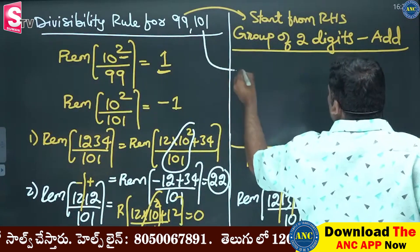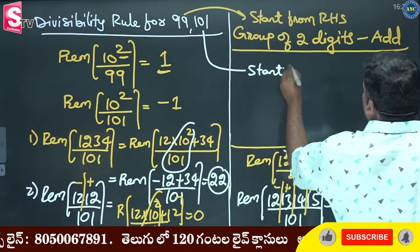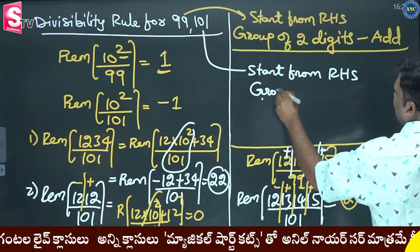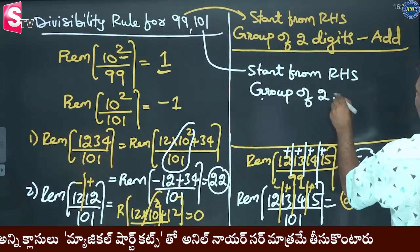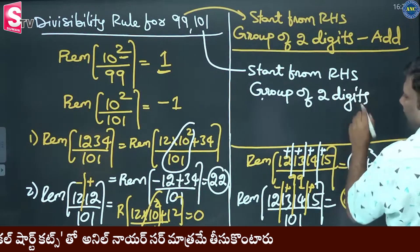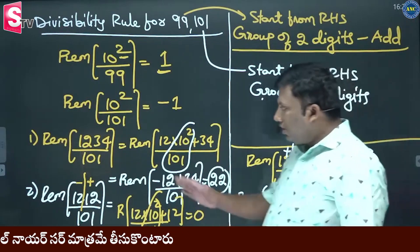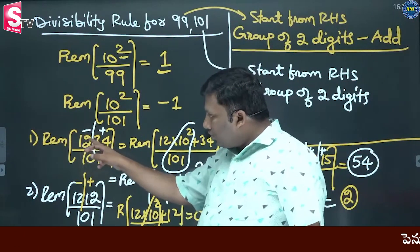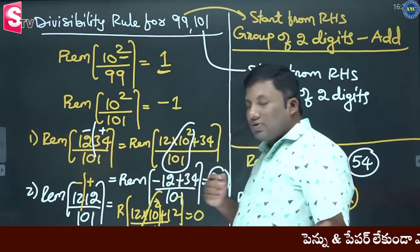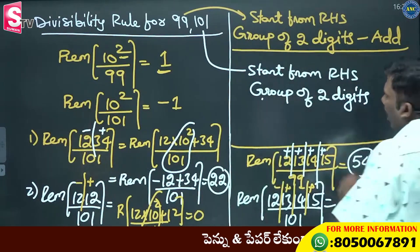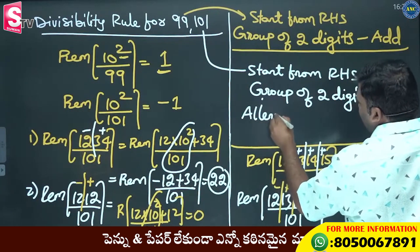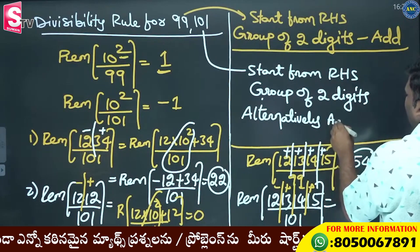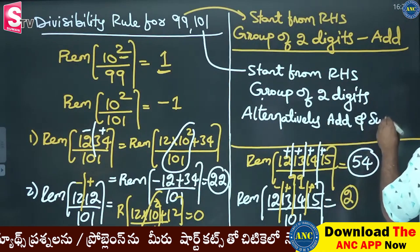For 101, start from right-hand side. Group of 2 digits — take a group of 2 digits and see what happens. Where you put the slash: this digit plus that digit, this digit minus that digit. Why minus? Because 10 square divided by 101 gives minus 1. Alternatively add and subtract, alternatively add and subtract. This concept is clear.